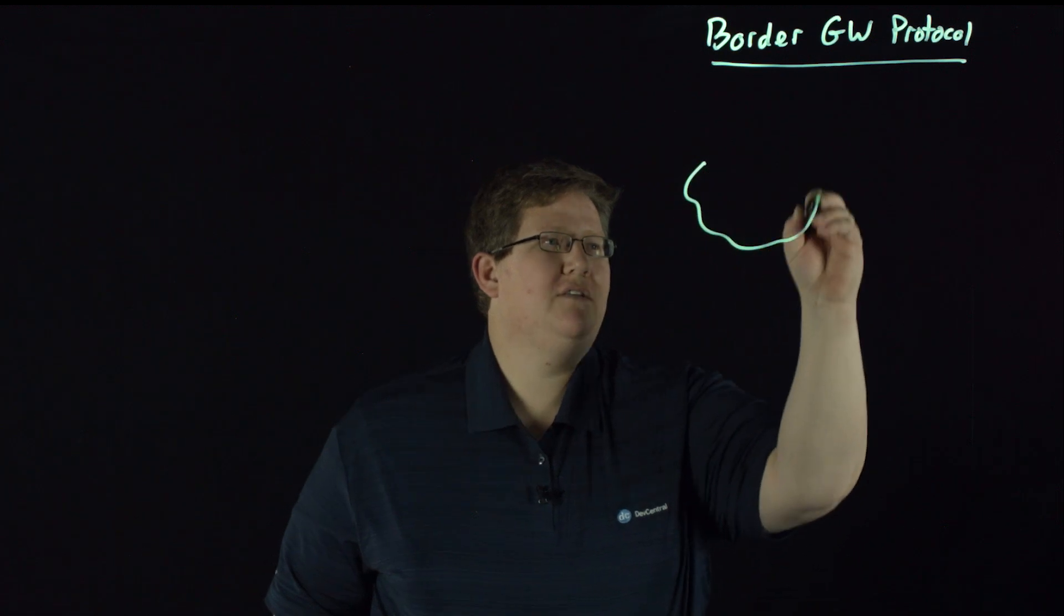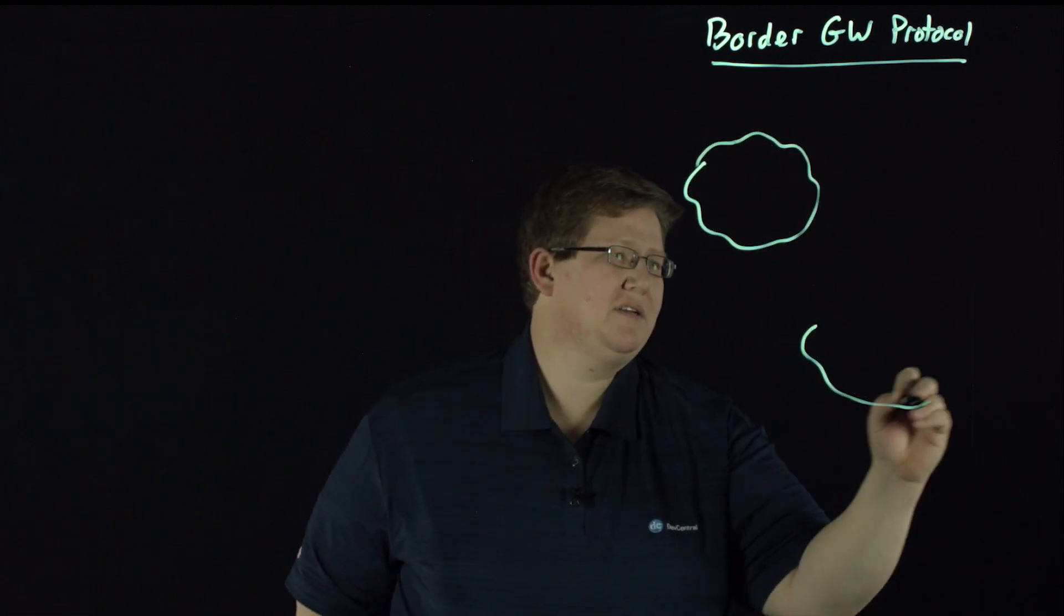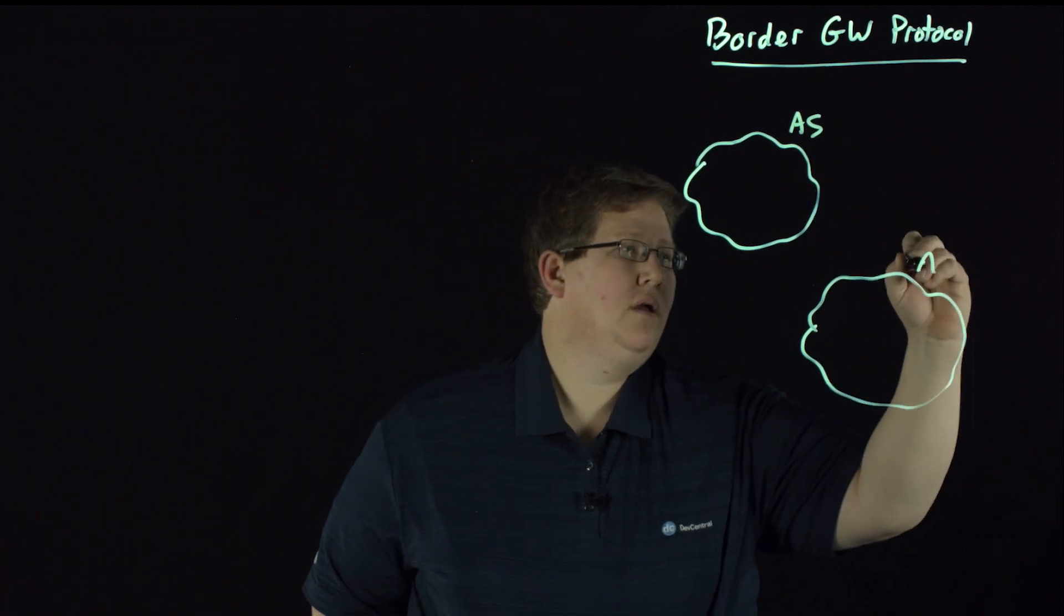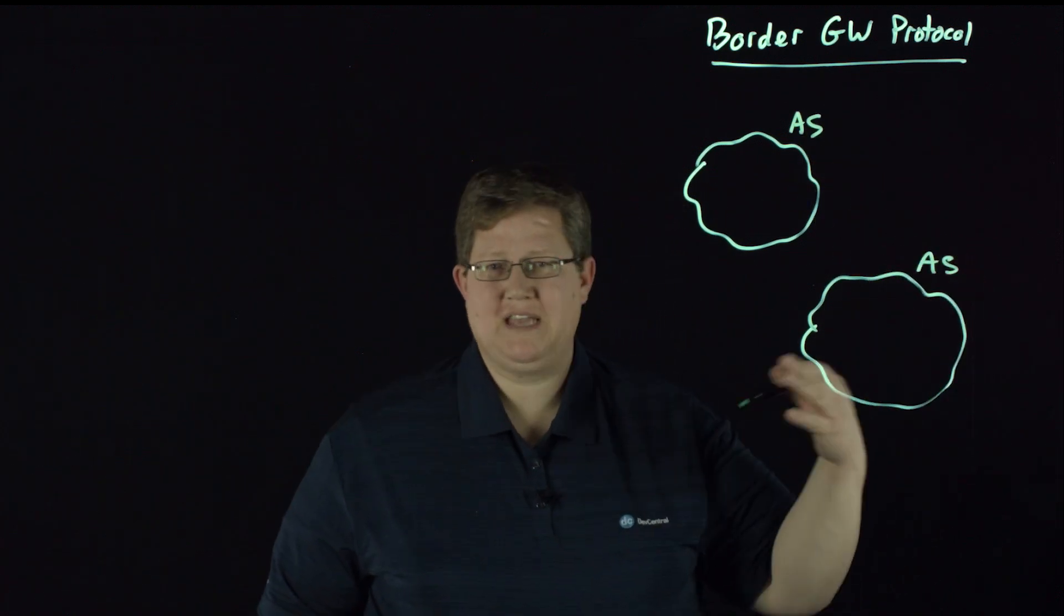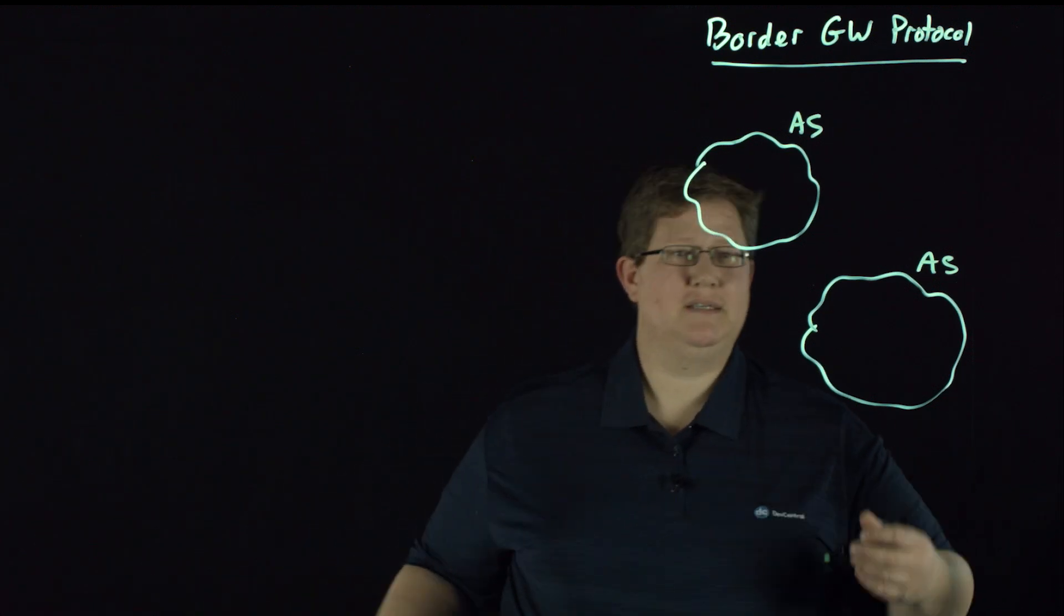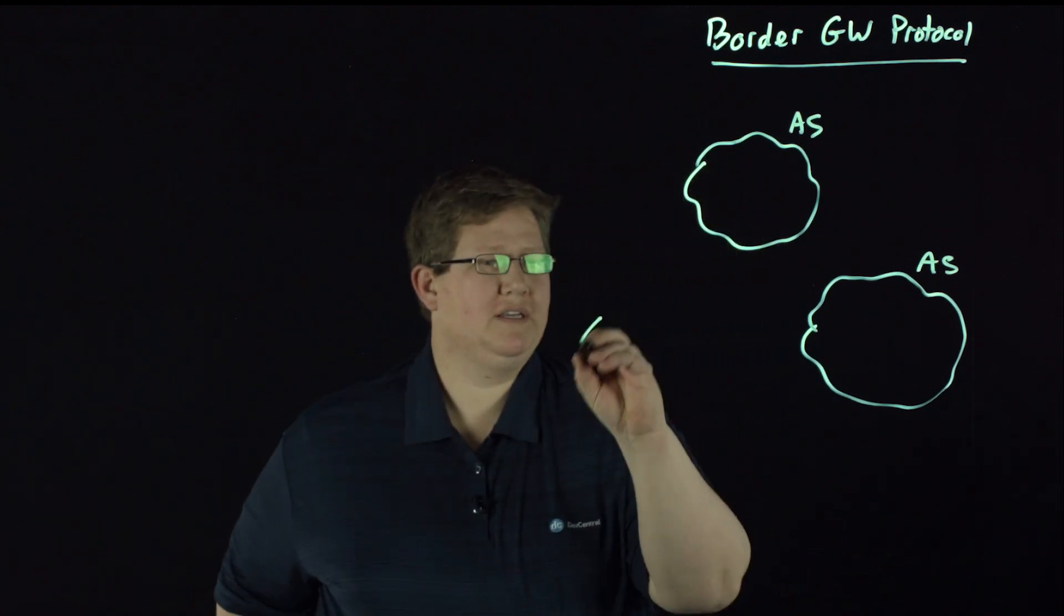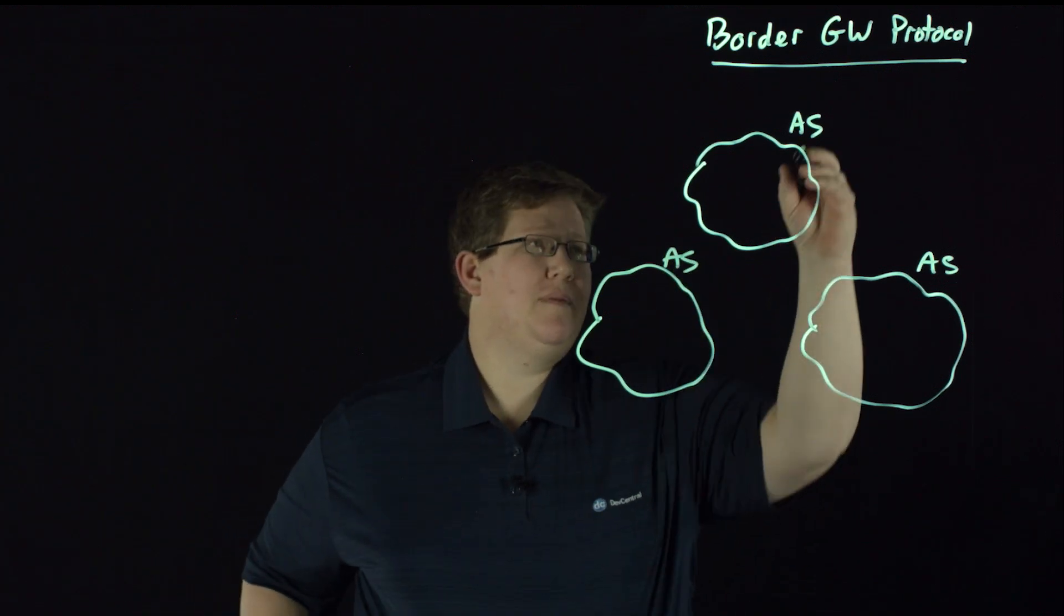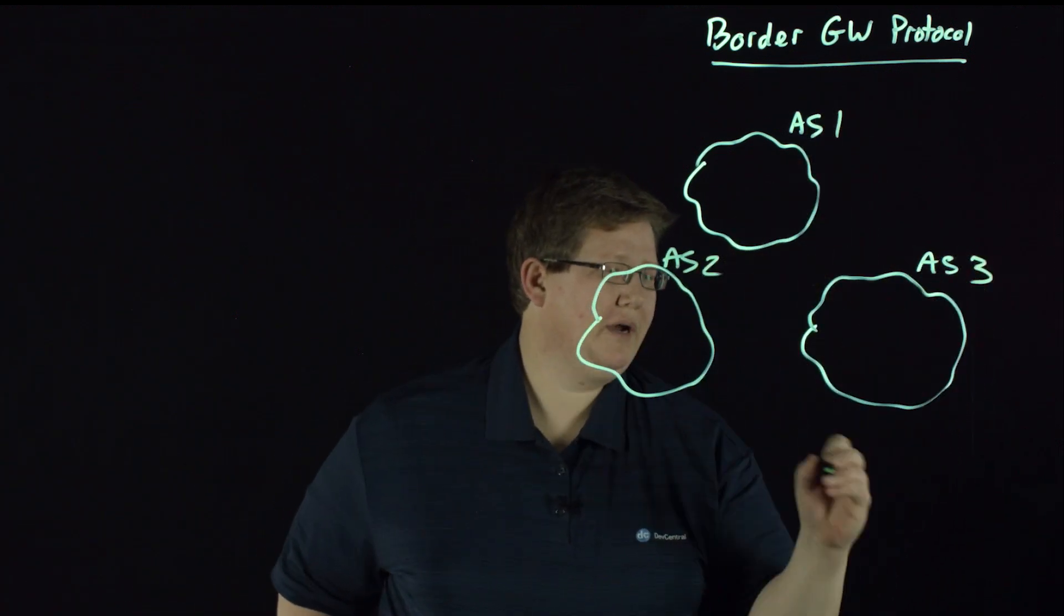And that's because you have all of these autonomous systems out here. Like an AT&T or a Savvis or a CenturyLink, Verizon, Level 3. You have all these ASs out there, autonomous systems. I don't have the numbers memorized, so we'll just say one, two, three.